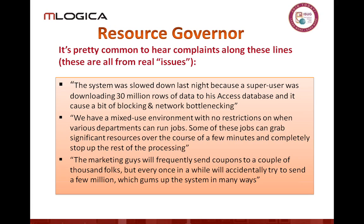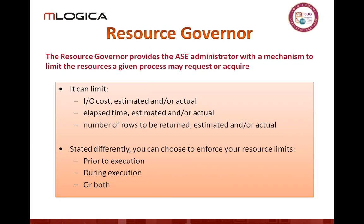Which departments run jobs and when? We've almost all seen situations where individual runaway jobs just grabbed all the resources and kept them, and didn't let everything else get up and running. This is less common in shops that have 32 processors running 30 engines, but it can happen in those environments as well. When you're trying to process, say, a million widgets, the system can get gummed up. So what we can do with the resource governor is limit the use of services to a user, group of users, group of applications, or some combination.